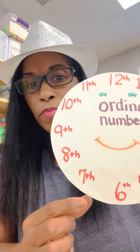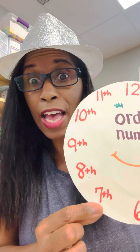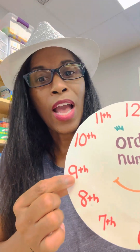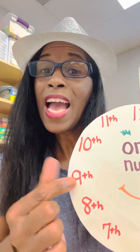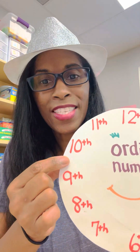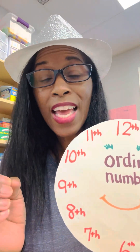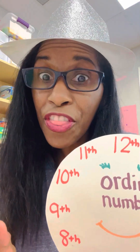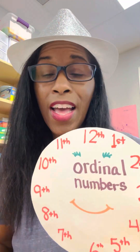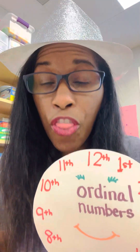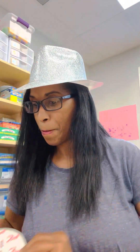See how I'm saying 'sixth' with the 'th.' We have the number seven and that would be seventh. We have an eight and that would be eighth. We have a nine and that will be ninth. We have a ten and that would be tenth. We have an eleven and that would be eleventh. We have a twelve and that would be twelfth — the twelfth number.